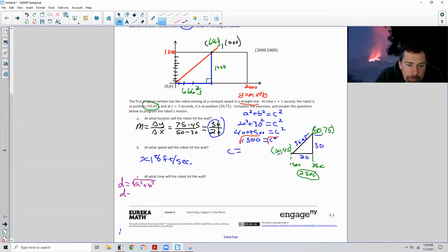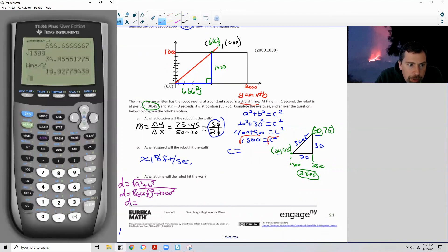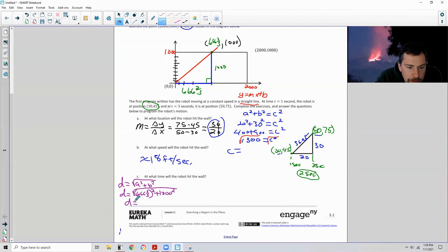So d equals the square root of 666 and two thirds quantity squared plus 1,000 squared. So the distance is, I can just go on my calculator and hit the square root of 666.6666 squared plus 1,000 squared. And we're taking the square root already. So the answer is approximately 1,202.